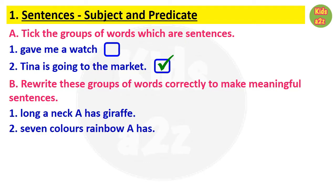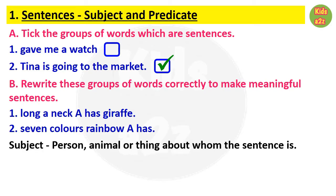For the first one, after rearranging, the sentence will be: 'A giraffe has a long neck.' For the second one, it will be: 'A rainbow has seven colors.' Now, subject and predicate — these are new to the kids. The subject of a sentence is the person,